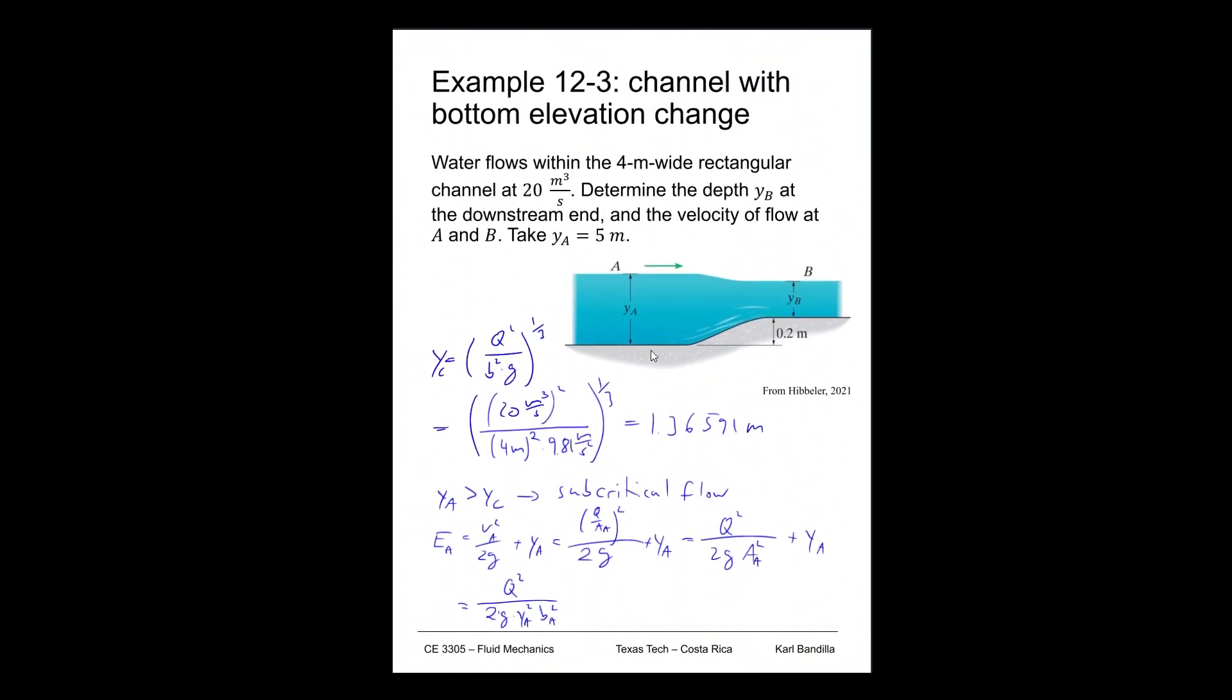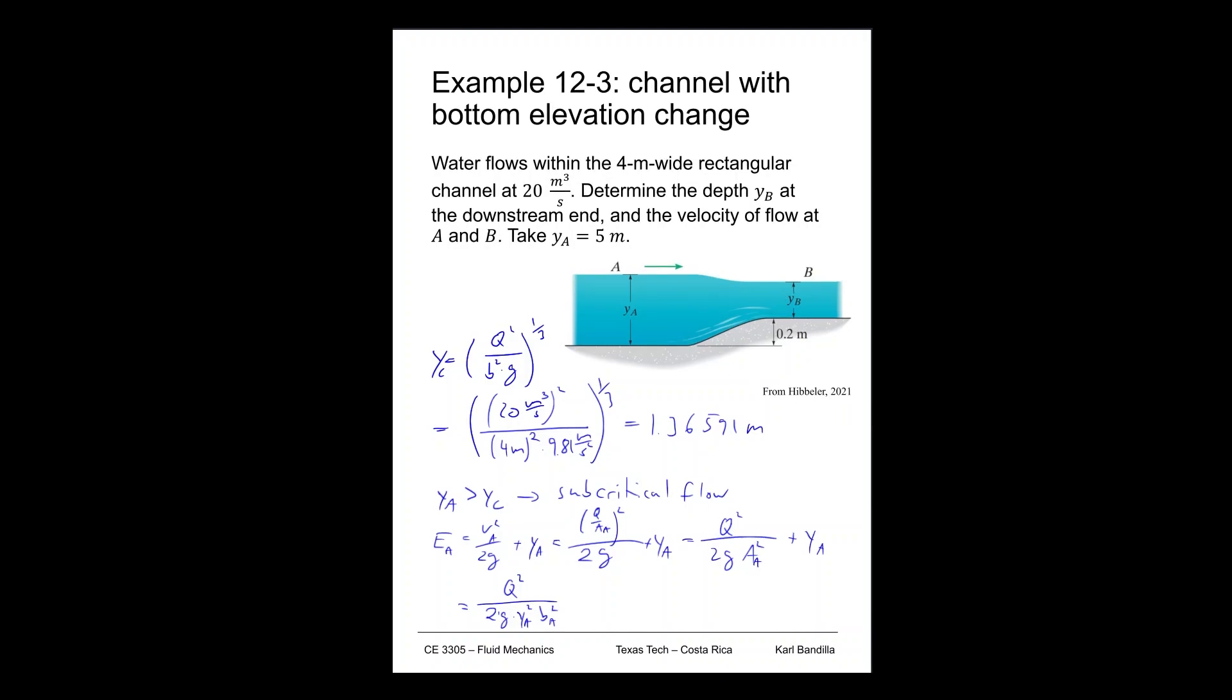So that's very close to what it was. Does this make sense? Well, we're going from a thicker to a thinner flow, so it makes sense that it will be moving a little faster at B. But we also have this jump, so that makes the difference not all that big. So with that we've found the depth at B and the flow velocities for the case where we have a change in bottom elevation for a rectangular channel.